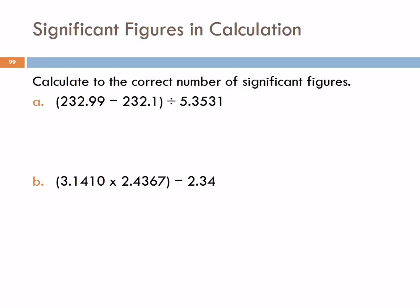It's always a good idea to just do the math and write down all the digits that your calculator gives you. So 232.99 minus 232.1 — that's a quantity, press equals — divided by 5.3531 equals. I'm going to write down everything: 0.166258803.